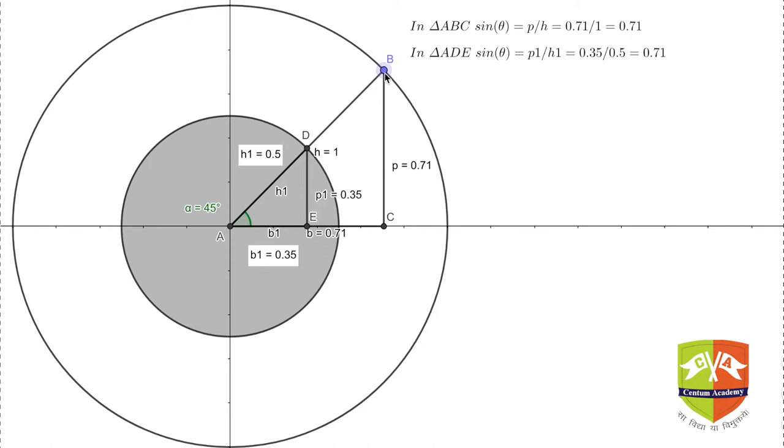If you can see, AB is of length 1, so H equals 1 is the length of AB. H1 is AD which is 0.5. Similarly, B1 is shown here as 0.31, which is AE. AC is 0.71. Similarly, BC is 0.71 and DE is 0.35.